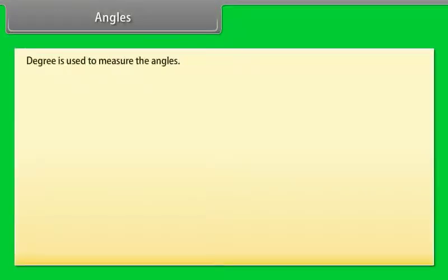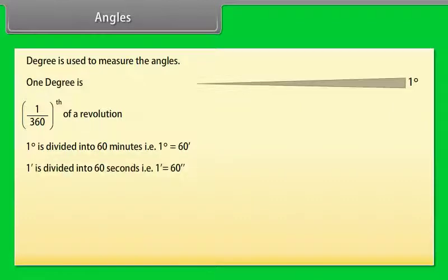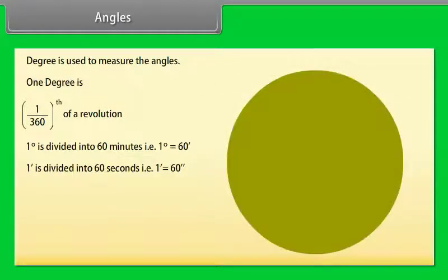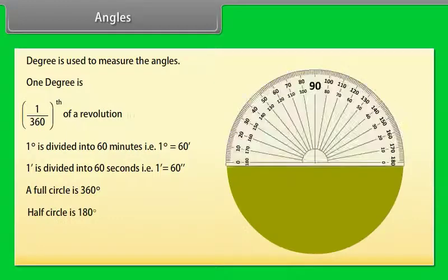How to measure the degree? Degree is used to measure angles. 1 degree is 1/360th of a revolution. 1 degree is divided into 60 minutes, that is 1 degree equals 60 minutes. 1 minute is divided into 60 seconds, that is 1 minute equals 60 seconds. There are 360 degrees in one full rotation. A full circle is 360 degrees and a half circle is 180 degrees.